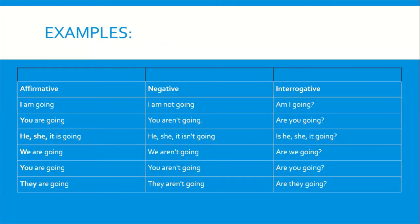We have a few more examples. In the affirmative: I am going, you are going, he/she/it is going, we are going, you are going, and they are going. In the negative form: I am not going, you are not — or you aren't — going, she is not going, or she isn't going. You can use either the full form or the short form; either one is completely fine.